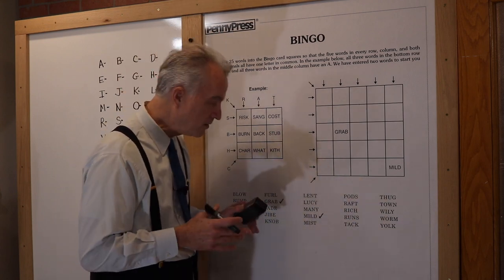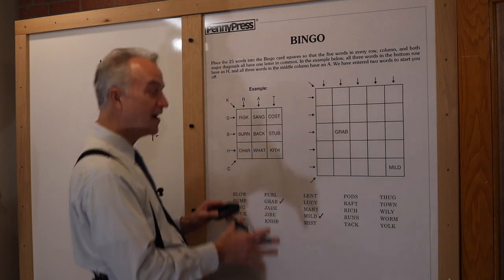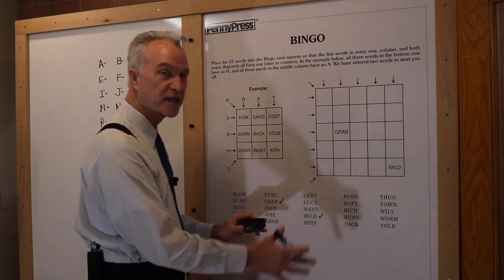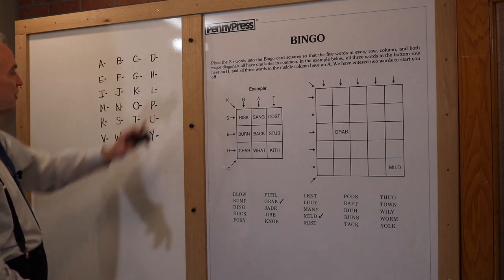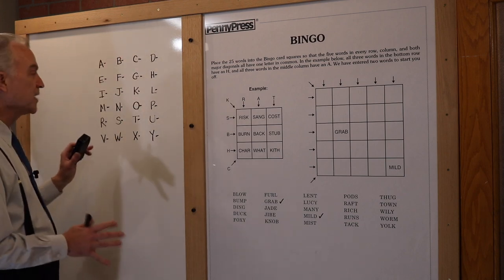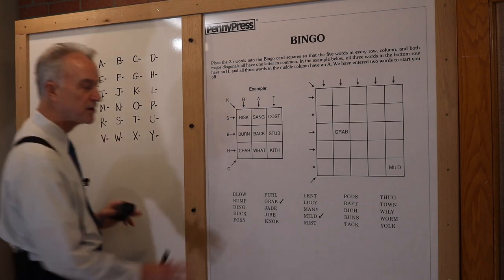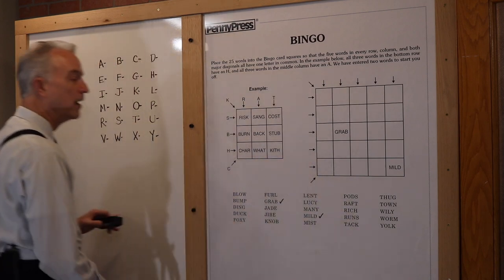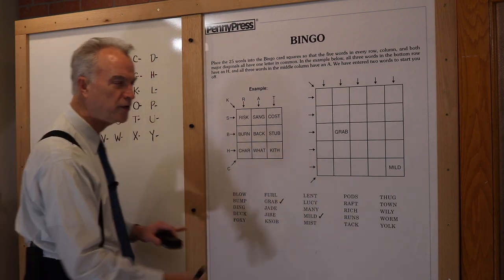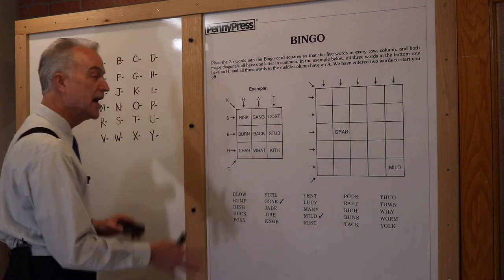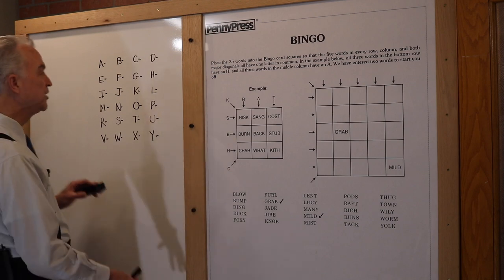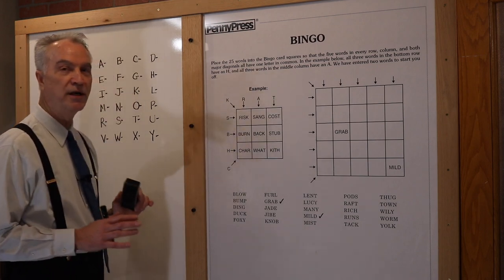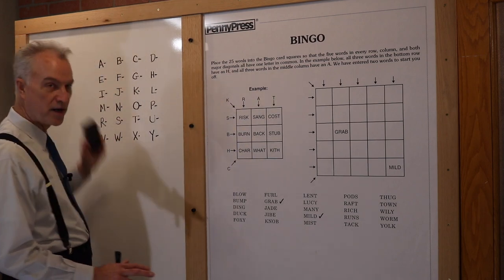That sounds like a lot of work — and it is. That's part of the fun of figuring out these puzzles. As you can see, I've got the letters written out already, but I don't have Q or Z, because they don't show up in any of these words. We have the other 24 letters of the alphabet represented. This is the point where I have to count each time a letter shows up, starting with the letter A.